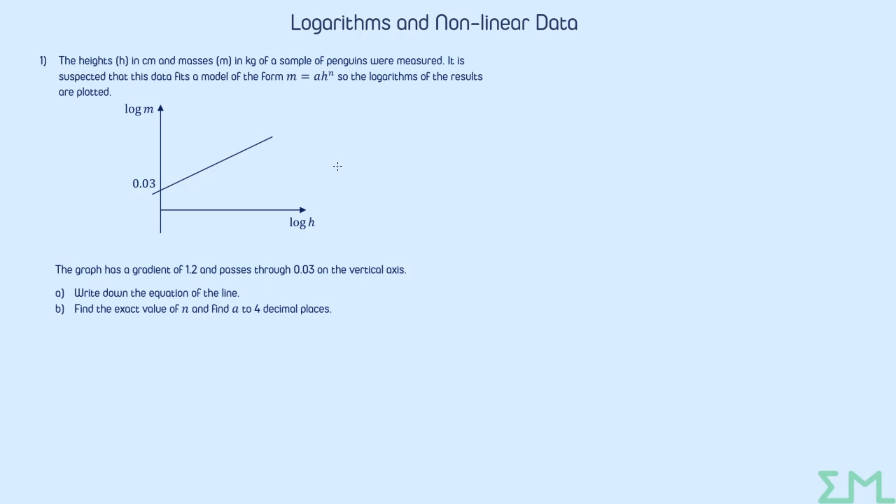Let's have a look at this question. We are told that the heights and masses of a sample of penguins have been measured. So we've got a bunch of data collected. There's a suspicion that the data fits a model of the form m equals a h to the n. So seeing as our variables here are m and h, that means that this is a polynomial model.